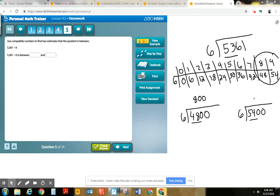And then 6 times what would equal 5400? 6 times 900 equals 5400. So my estimate is between 800 and 900. Problem five here doesn't ask for which one you would actually use.